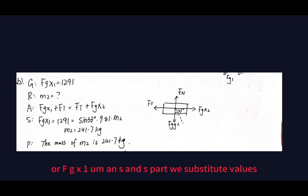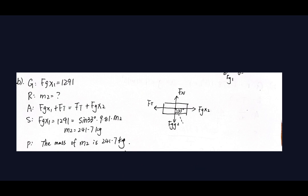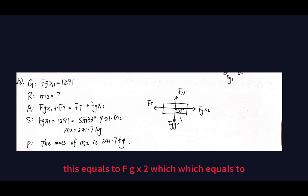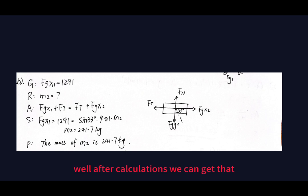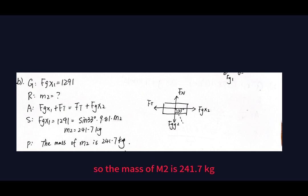Substituting the values: fgx1 equals 1291.4 Newtons as calculated previously. This equals fgx2, which equals sine 33 degrees times 9.81 times m2. After calculation, m2 equals 241.7 kilograms, so the mass of m2 is 241.7 kilograms.